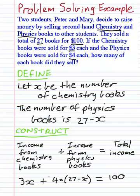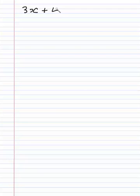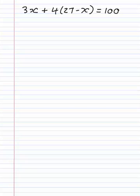We've got an equation now. So far what we had was: 3X plus 4(27 minus X) is equal to 100. We've now set up the equation.